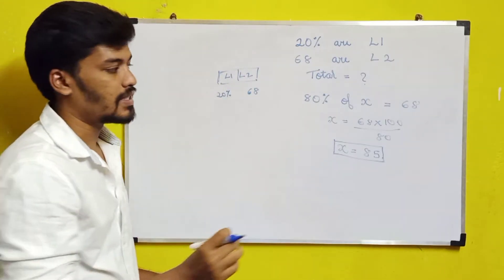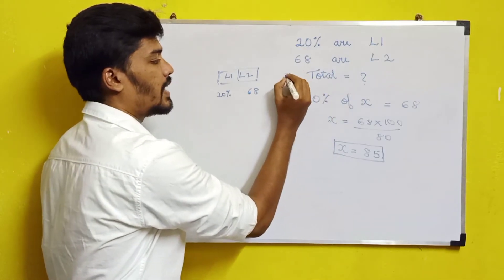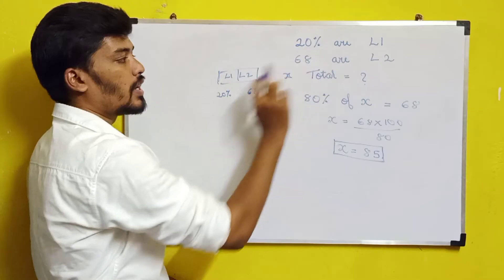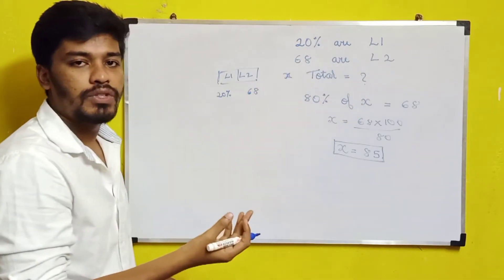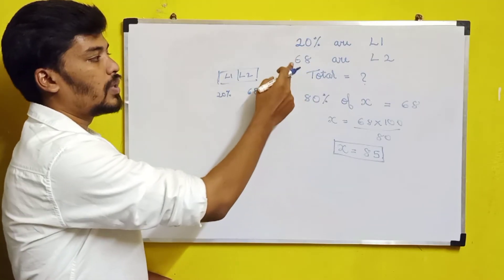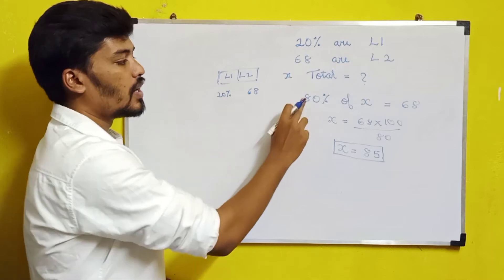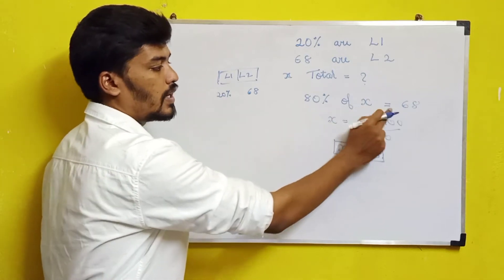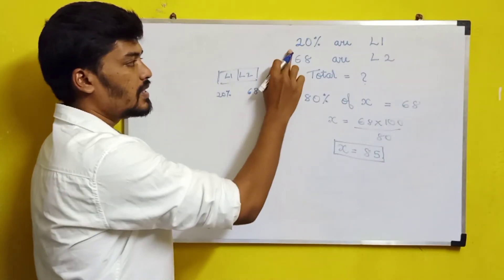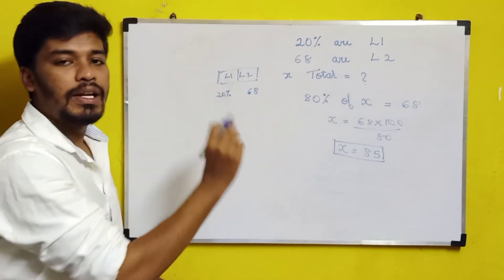To find the answer, let's consider the total as X. If 20% are L1 keywords, the remaining 80% will be L2 keywords. So 80% of total keywords equals 68. That's the formula we're going to apply: 80% of X equals 68.